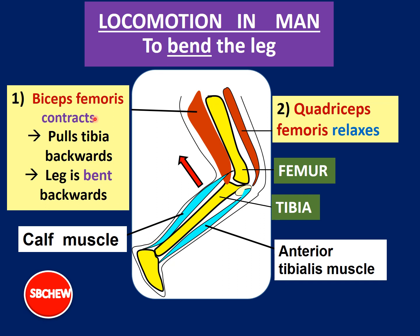Today we are focusing on the main muscles: biceps femoris and quadriceps femoris. The calf muscle is at the back and the anterior tibialis muscle is at the front, but these two are rarely asked. The key muscles to know are biceps femoris and quadriceps femoris.